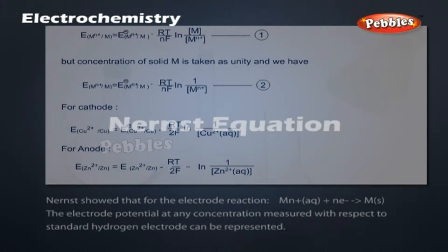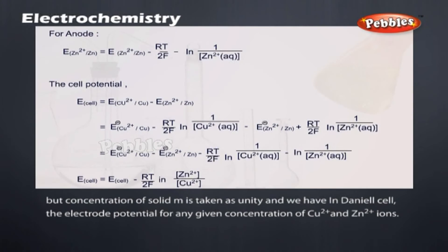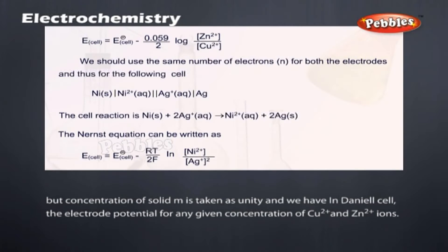Nernst equation. Nernst showed that for the electrode reaction shown above, the electrode potential at any concentration measured with respect to standard hydrogen electrode can be represented. The concentration of solid M is taken as unity, and we have in Daniel cell the electrode potential for any given concentration of Cu2+ and Zn2+ ions.